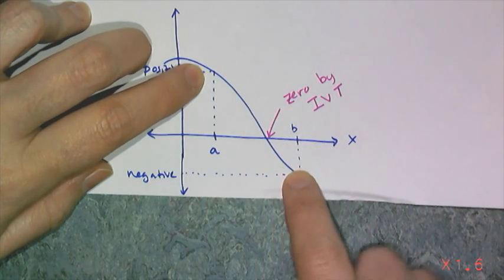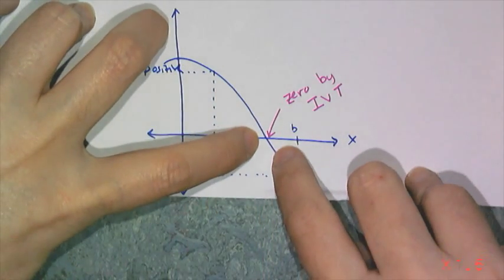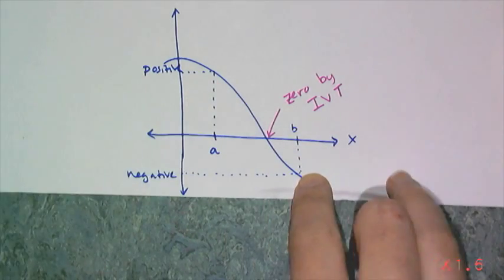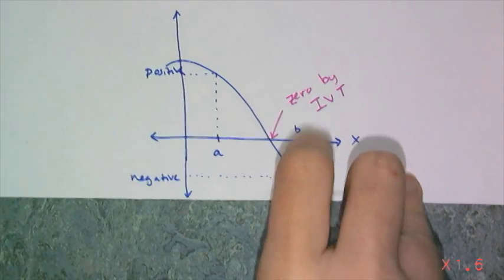The Intermediate Value Theorem allows us to figure out that we do have real roots in between when it crosses the x-axis. It goes from positive to negative or negative to positive.